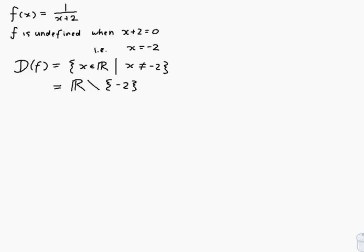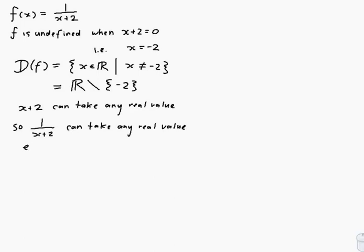Let's first investigate what possible values we can get by doing x plus 2. x plus 2 can take any real value, since you could stick any x in there and get any other value you wanted. So doing 1 over any real number, you can produce any other real number except 0, because you can't produce 0 by doing division — you can get as close to 0 as you like but you can't actually get there. So 1 over x plus 2 can take any real value except 0.